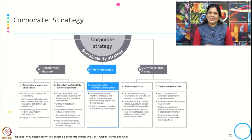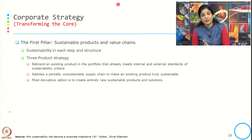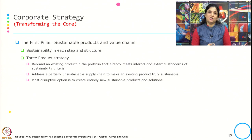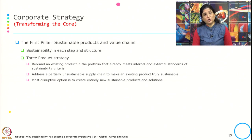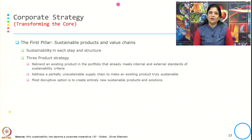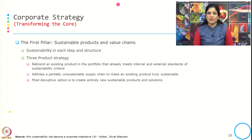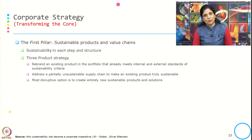The first pillar is sustainable product and value chain, which falls under transforming the core. This pillar consists of sustainability in each step and each structure. There are three product strategies under this. First, rebrand an existing product in the portfolio that already meets internal and external sustainability criteria. Second, address a partially unsustainable supply chain to make the existing product truly sustainable. Third — the most challenging — is pursuing disruptive options to create entirely new sustainable products and solutions.